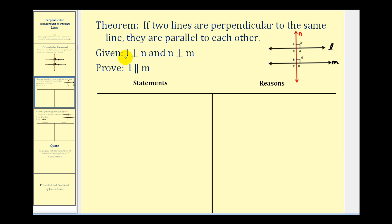Remember, if we know that these lines are perpendicular, they intersect and form right angles. Looking at our diagram here, if we consider angle two and angle six, we know they're both right angles because they were formed by perpendicular lines. Therefore they measure 90 degrees. The reason I selected angle two and angle six is because those are corresponding angles. So if corresponding angles are congruent, then the lines would have to be parallel due to the corresponding angles converse.